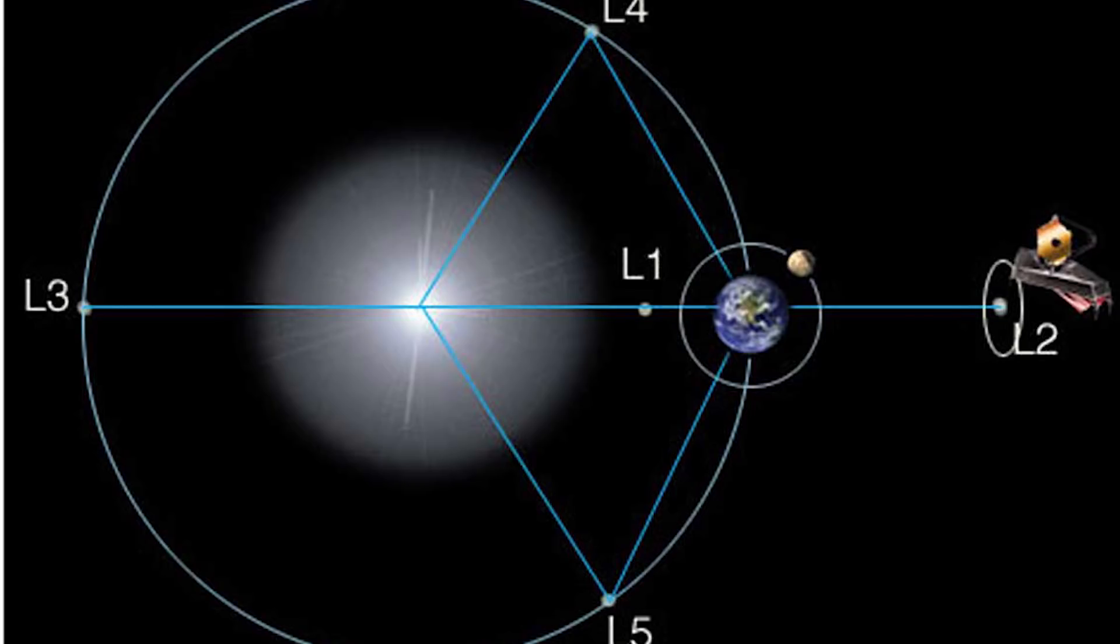This is actually Lagrange point one. So what is Lagrange point one? First, we have to understand what a three body system is. So in this case, a three body system means that we're looking at the sun, we're looking at Mars, and we're looking at a spacecraft.